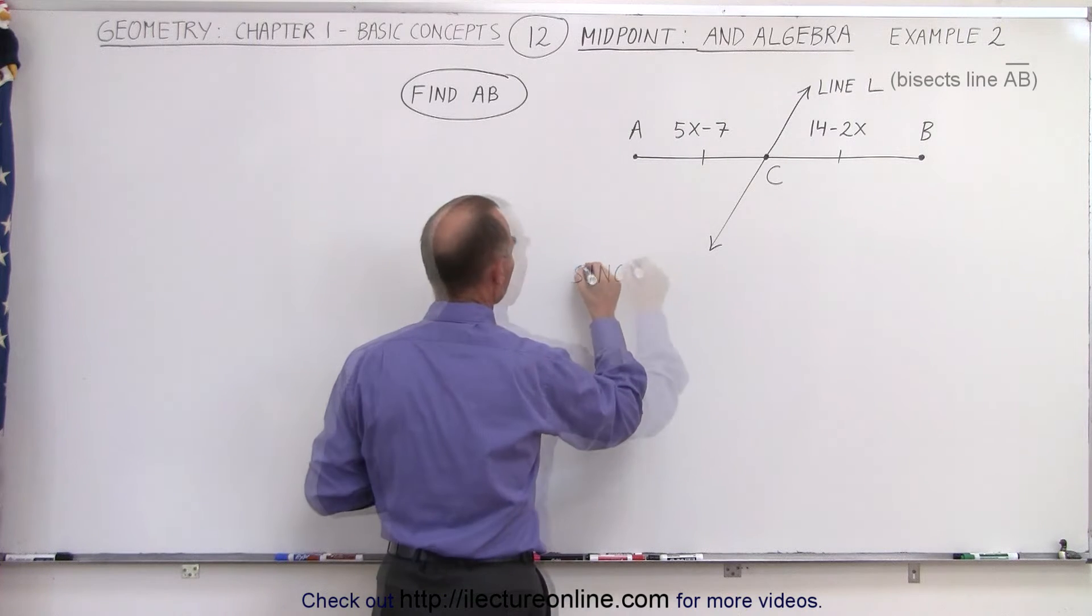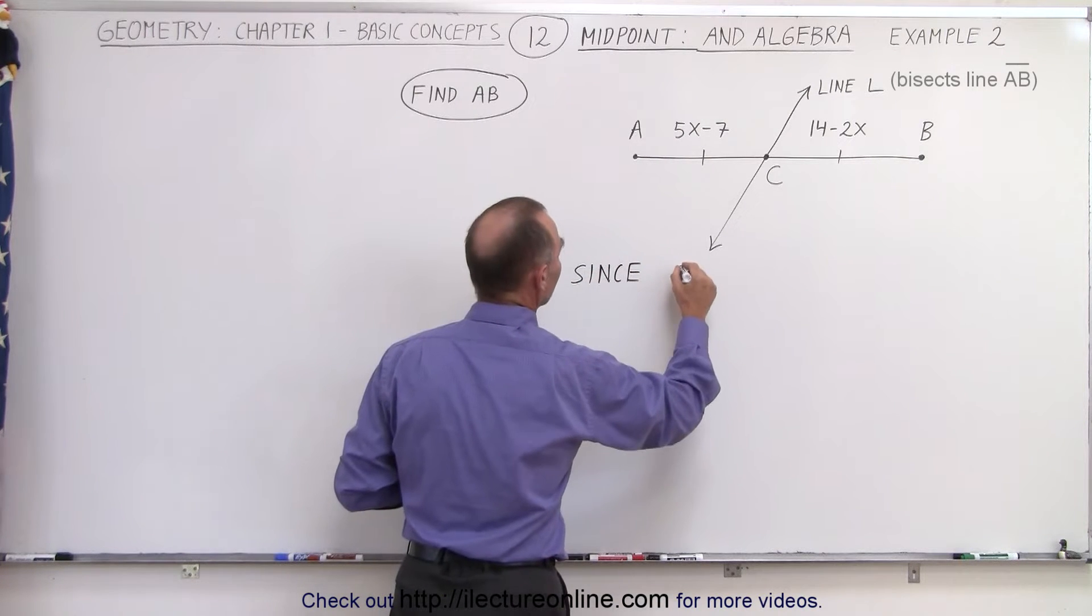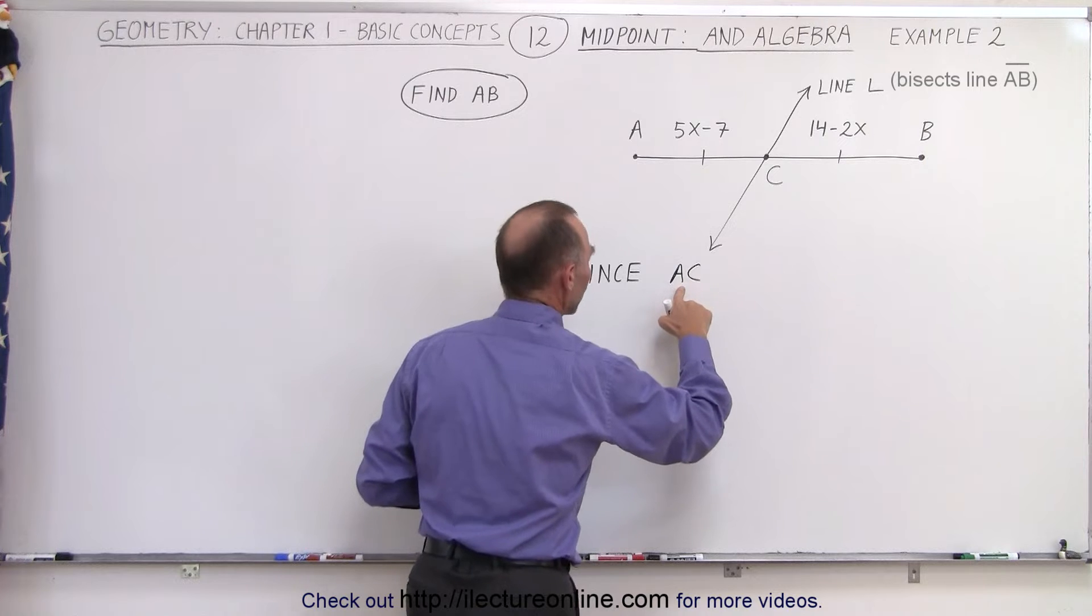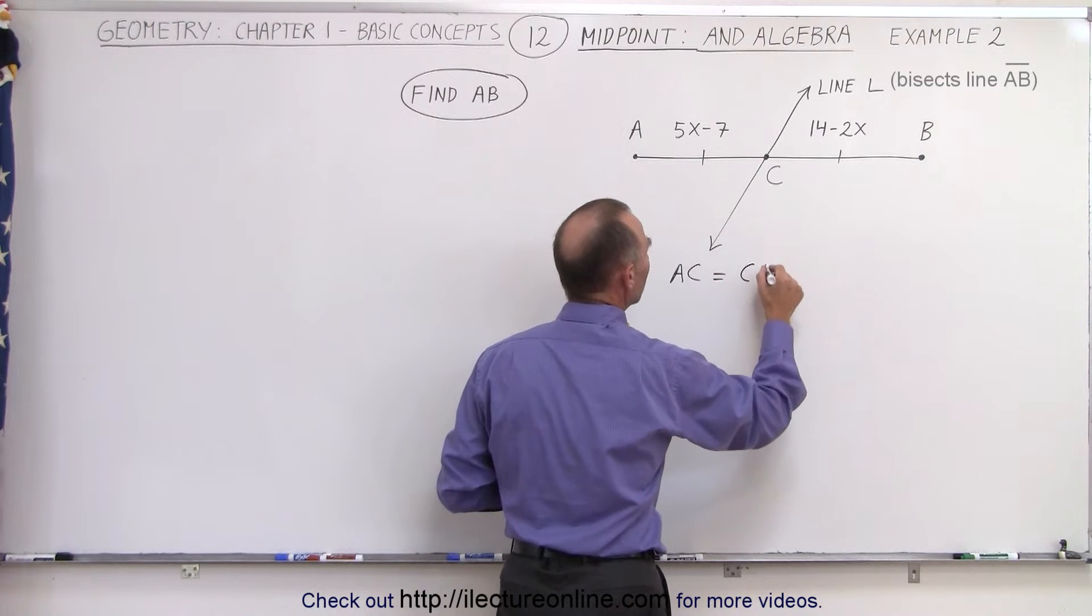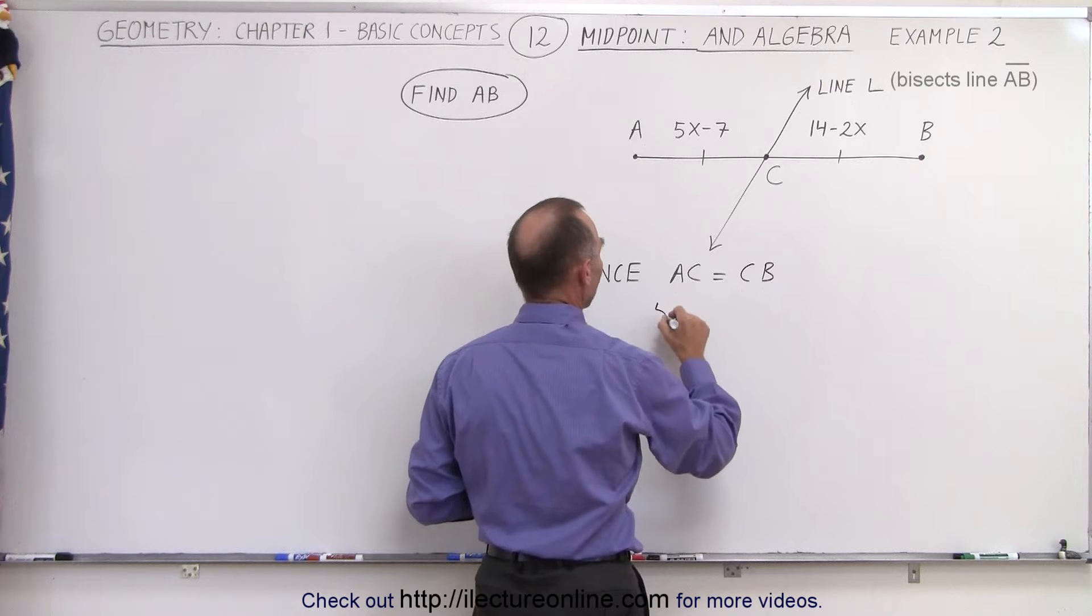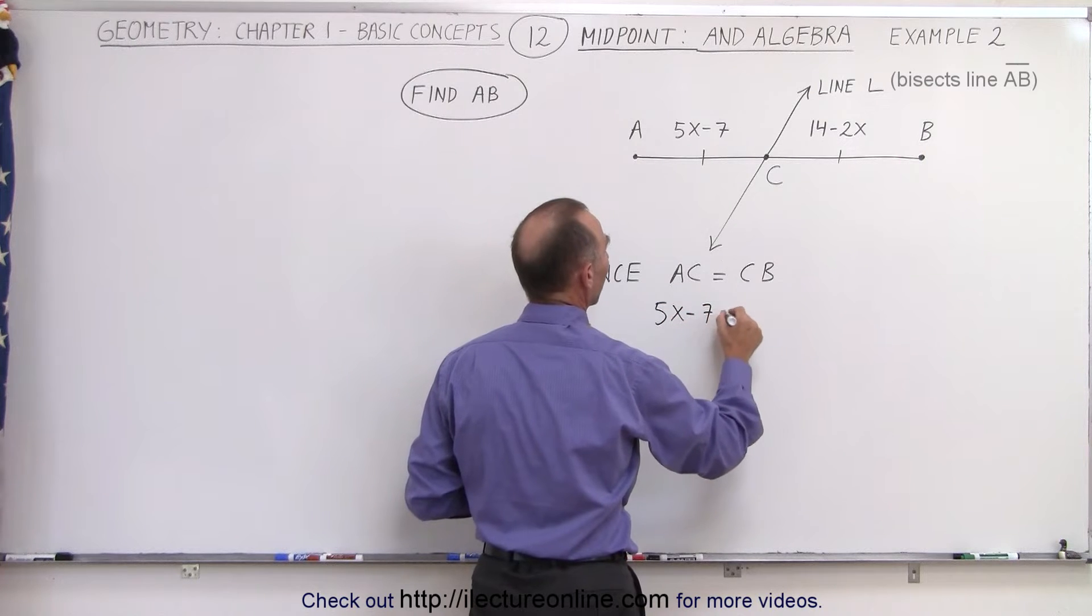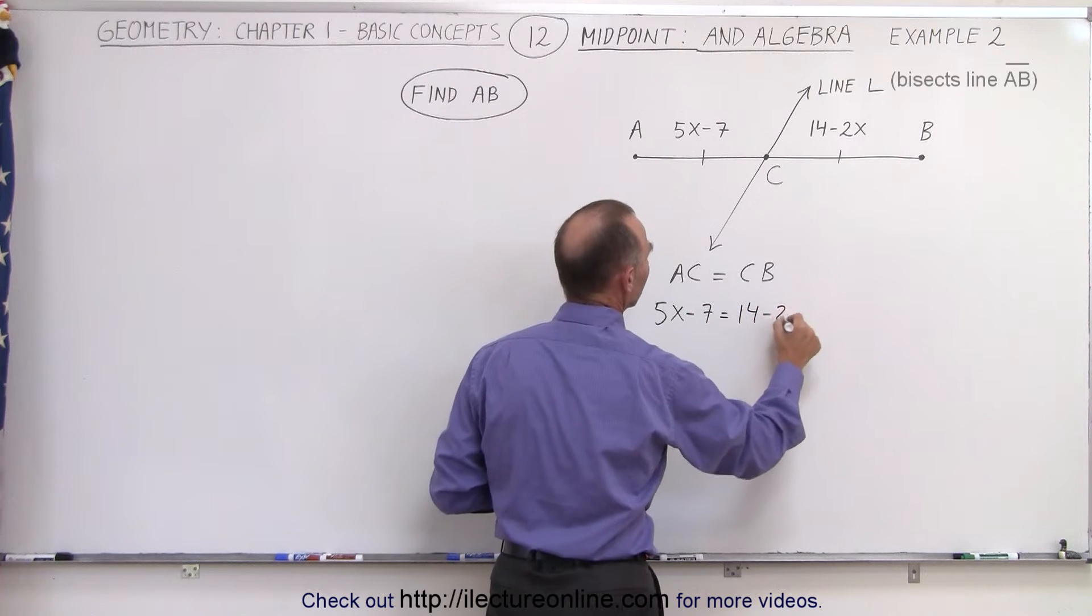So since the line segment from A to C, or the length AC, is equal to the length CB, we can then claim that 5x minus 7 must equal 14 minus 2x.